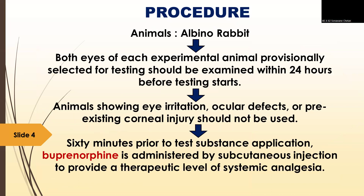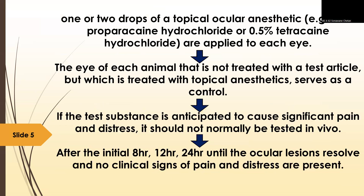Procedure: take an albino rabbit. Both eyes of each experimental animal provisionally selected for testing should be examined within 24 hours before testing starts. Animals showing irritation, ocular defects, or pre-existing corneal injury should not be used. 60 minutes prior to test substance application, buprenorphine is administered by subcutaneous injection to provide a therapeutic level of systemic analgesia. One or two drops of topical ocular anesthetic — for example, 0.5% proparacaine hydrochloride or 0.5% tetracaine hydrochloride — are applied to each eye. The eye of each animal not treated with the test article but treated with topical anesthetics serves as a control.